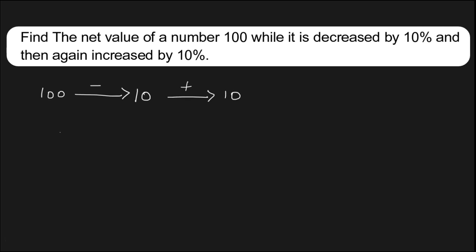Then how to find the net percentage change of 100? That is minus 10 plus 10 minus 10 into 10 upon 100%. This plus 10 and minus 10 got cancelled. Zero, zero got cancelled.